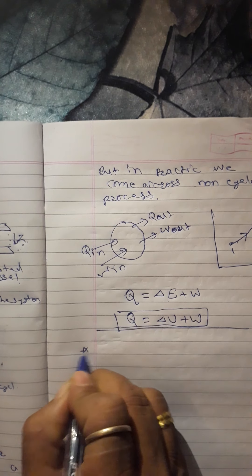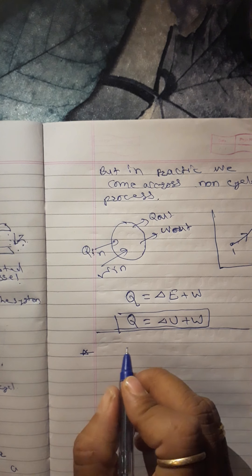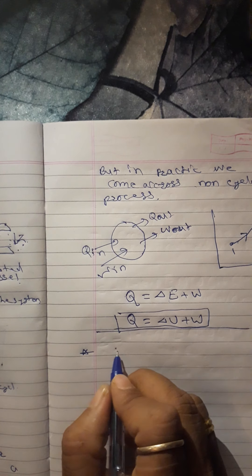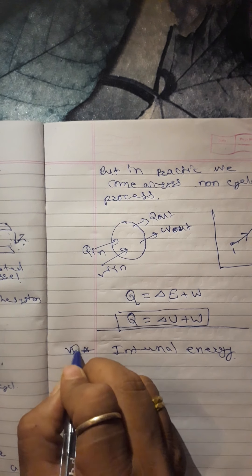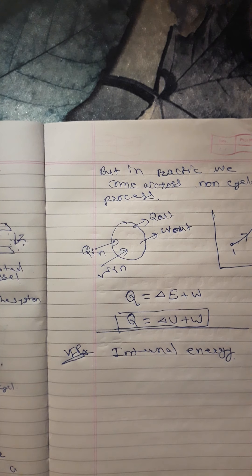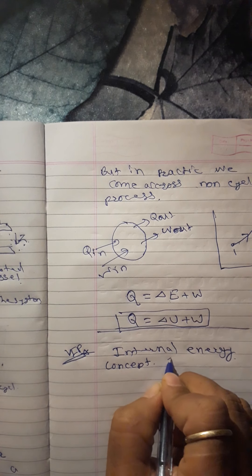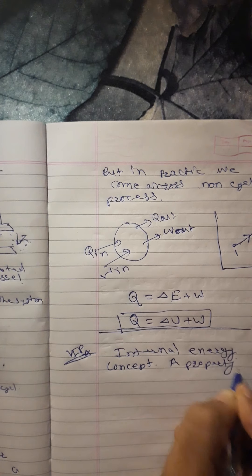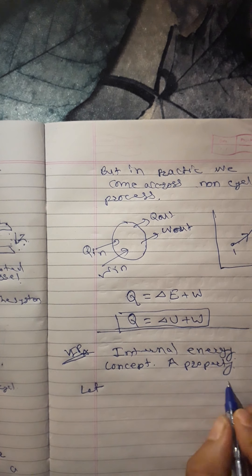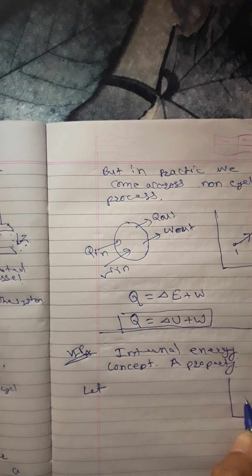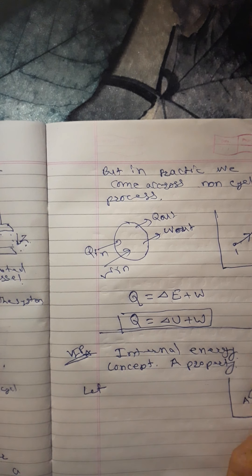Next, we have to think about internal energy — what is internal energy? We need to prove that internal energy is a property. This is a very important point worth 5 marks. Let us draw a diagram: this is point A and this is point B, forming a cycle.